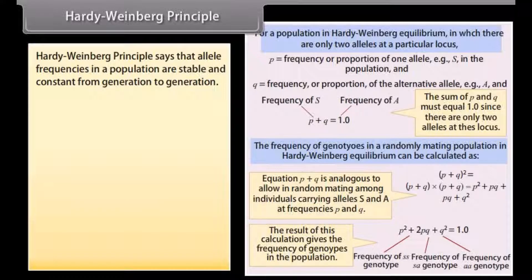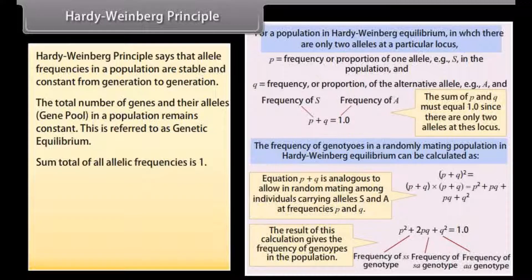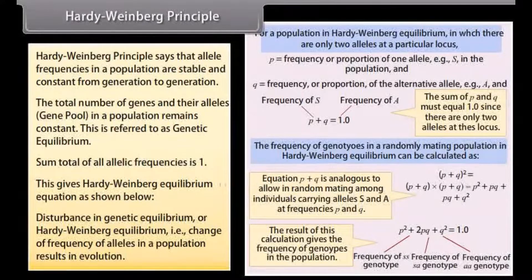The Hardy-Weinberg Principle states that the allele frequencies in a population are stable and constant from generation to generation. The total number of genes and their alleles — that is, the gene pool — in a population remains constant. This is referred to as genetic equilibrium. The sum total of all allelic frequencies is 1. Disturbance in Hardy-Weinberg equilibrium, i.e. change of frequency of alleles in a population, results in evolution.